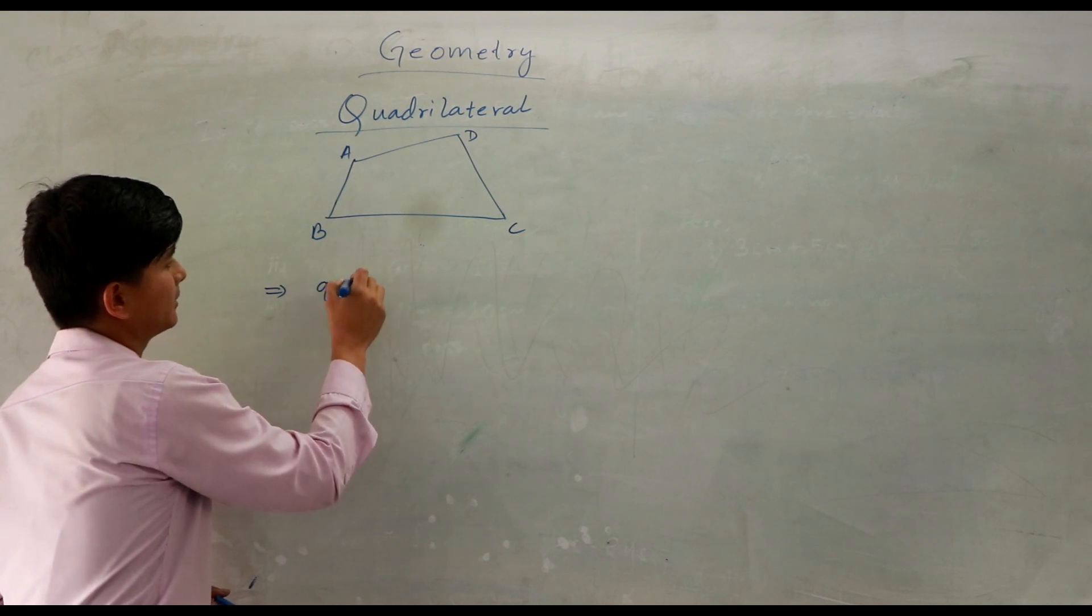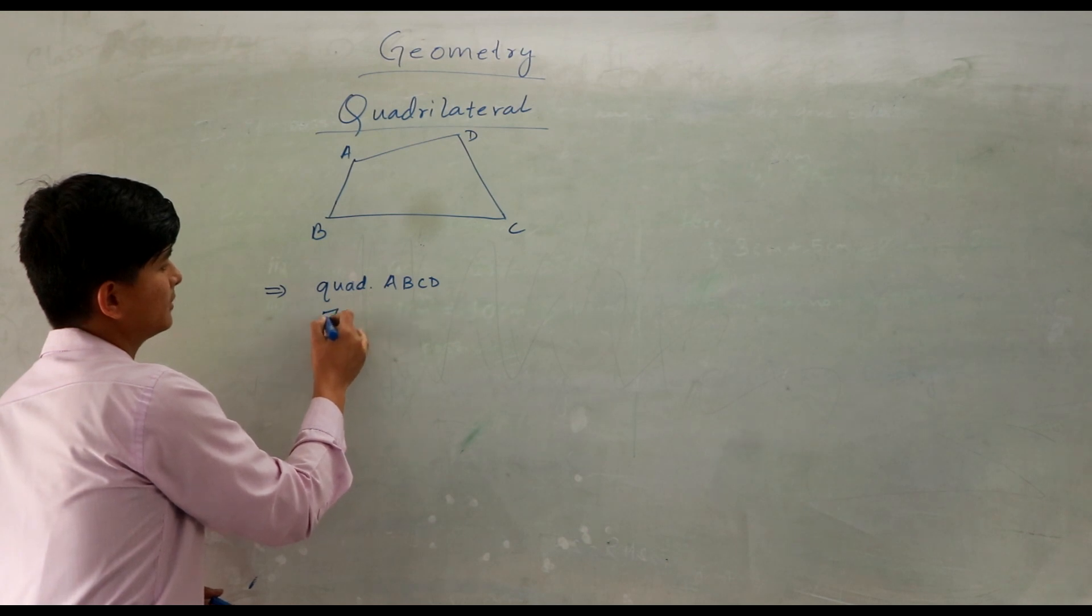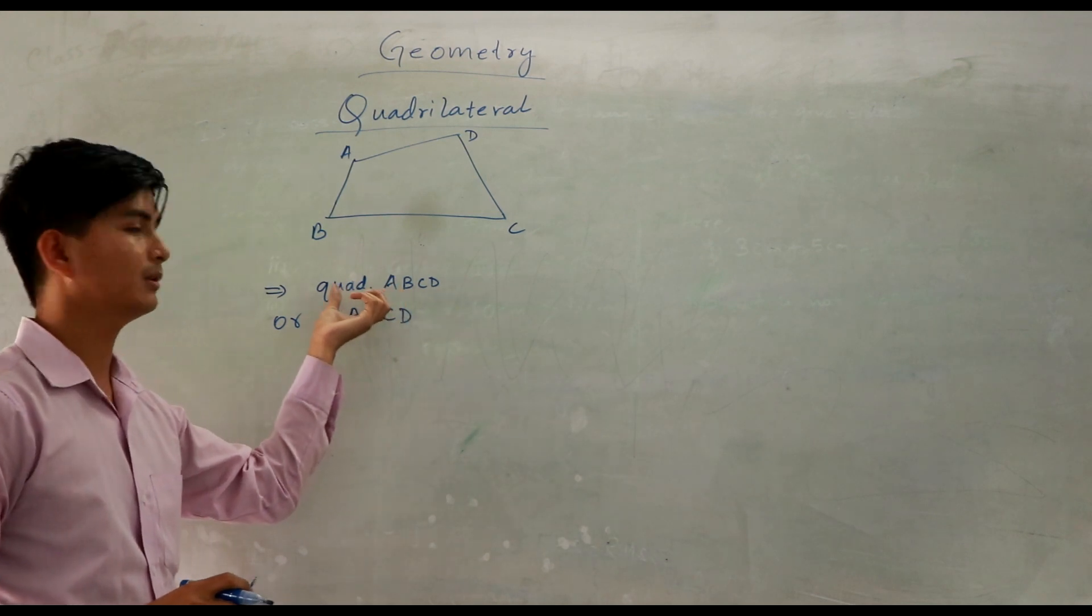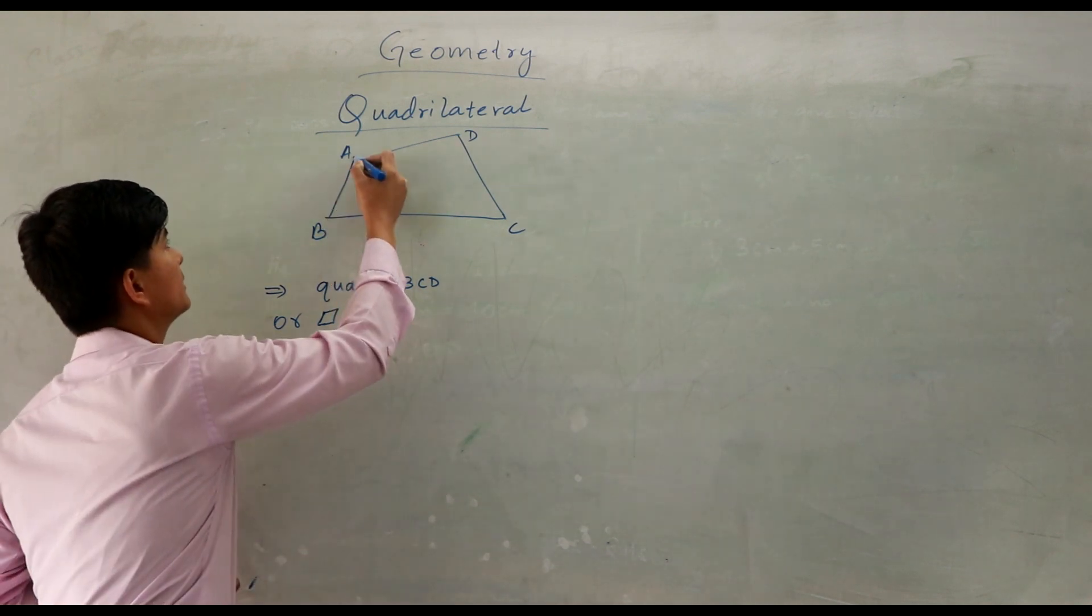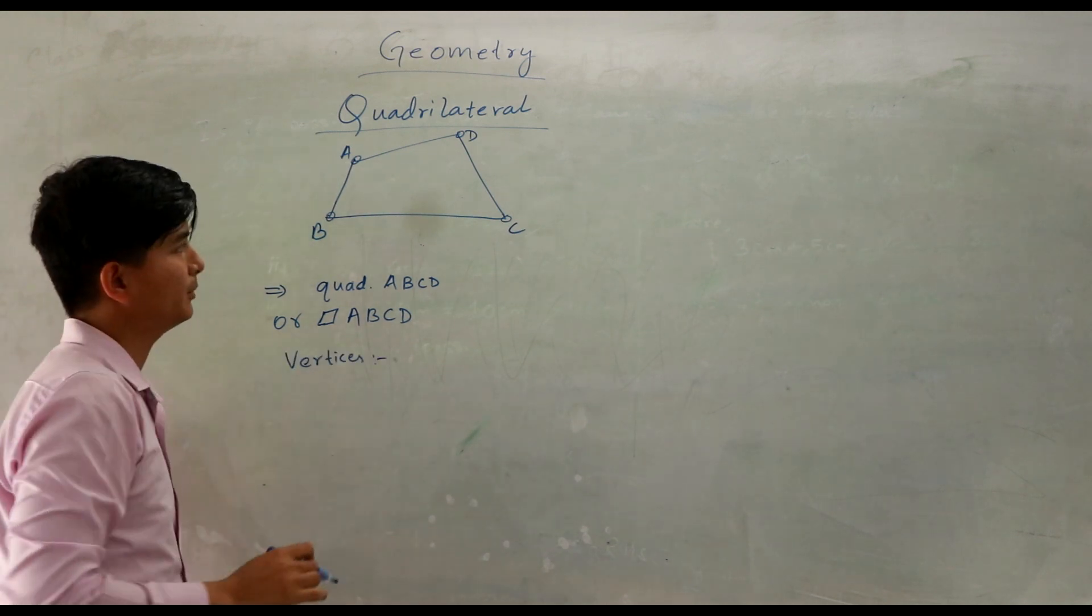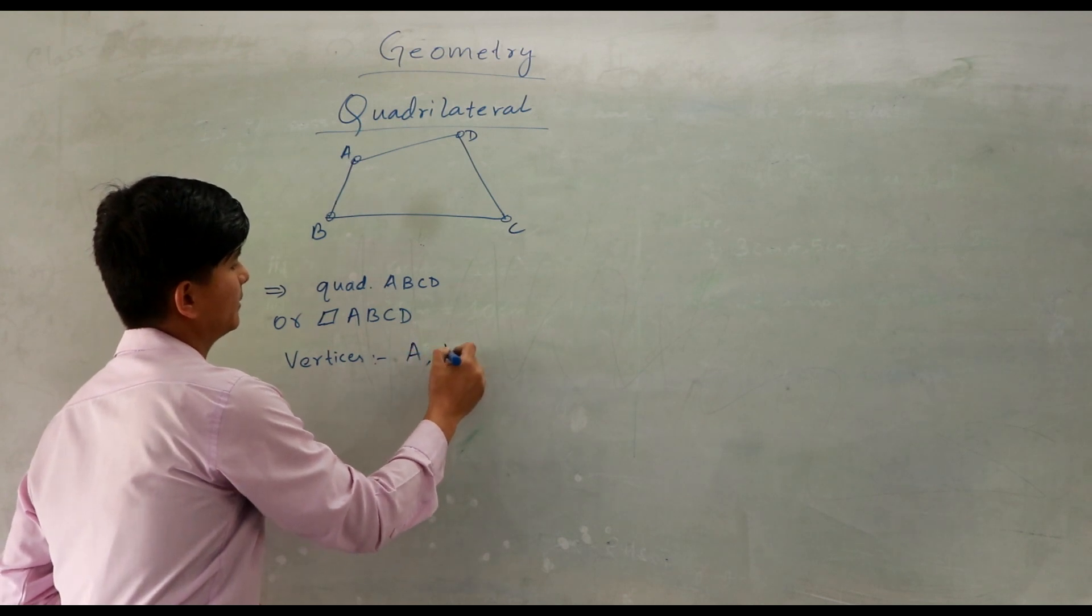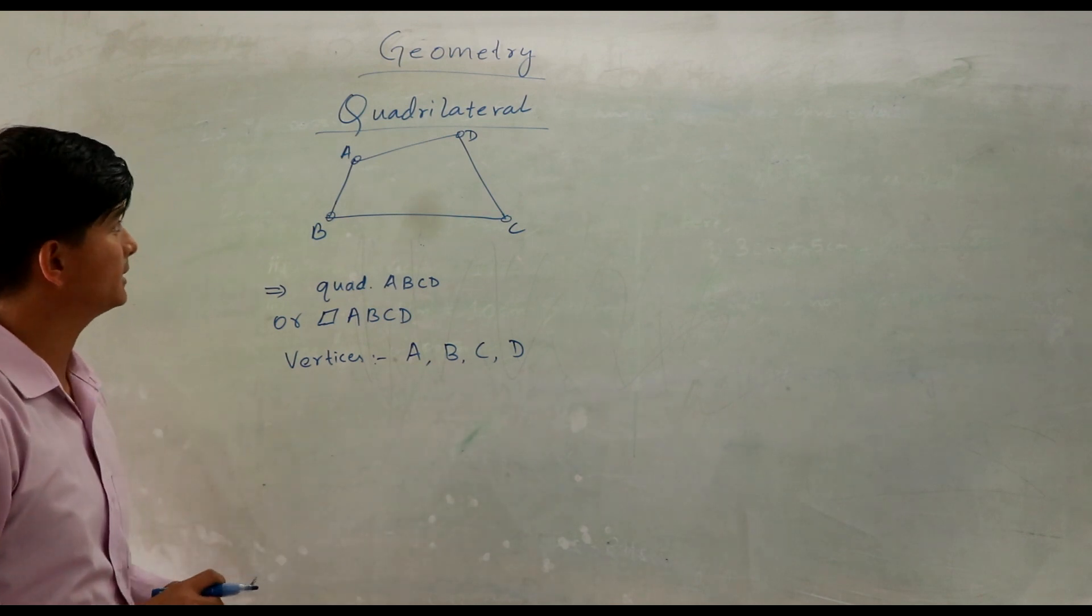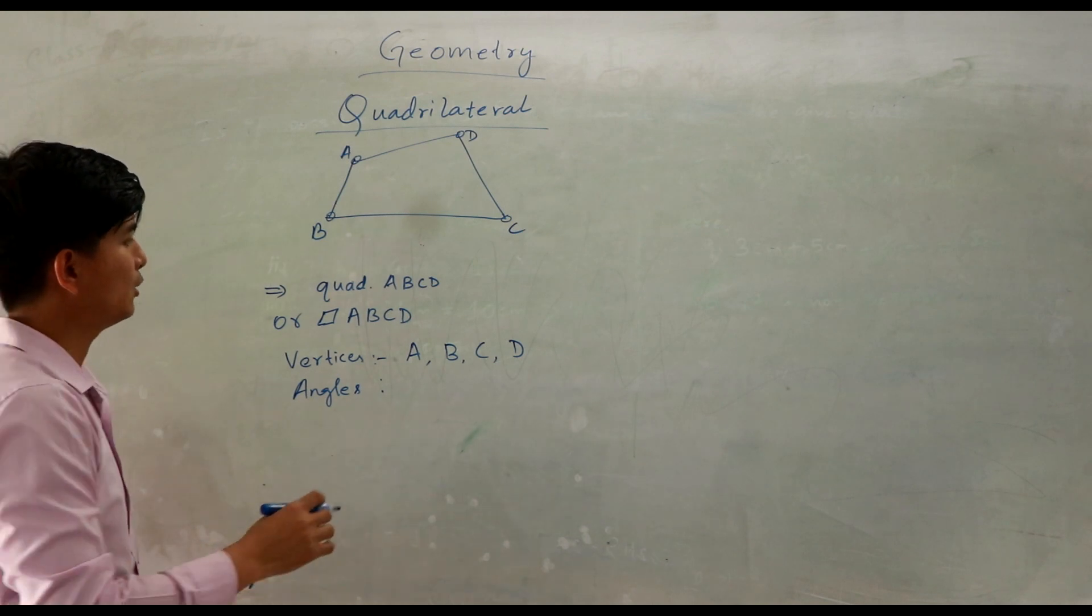So in a simple way you can name this one as quad ABCD like this, or you can write it with the quadrilateral symbol ABCD. Now here we can see four corners in quadrilateral, which are also four angles. How many vertices are there in quadrilateral? These are the corners, also called vertices. It has A, B, C, and D, so four vertices, which is ABCD.